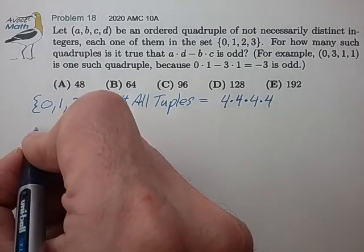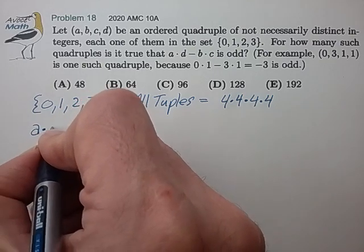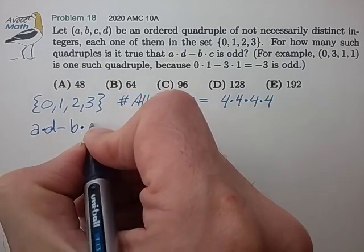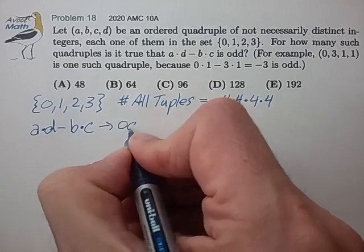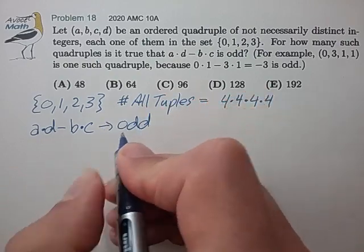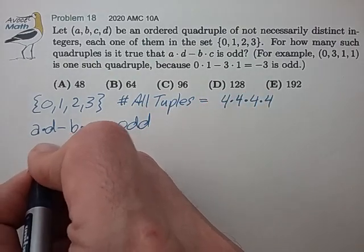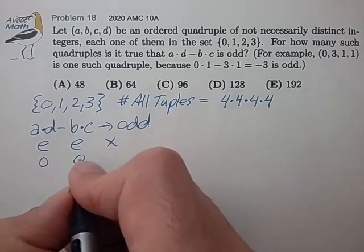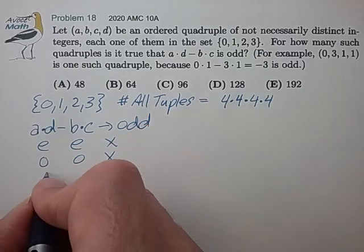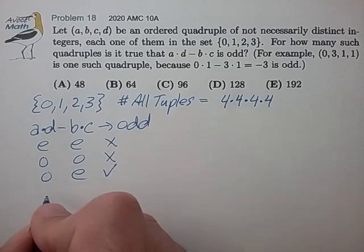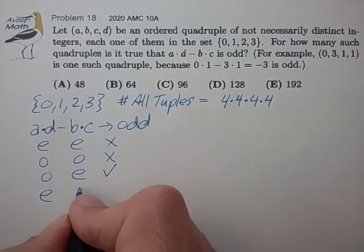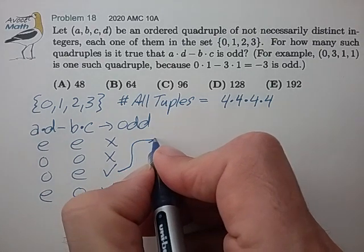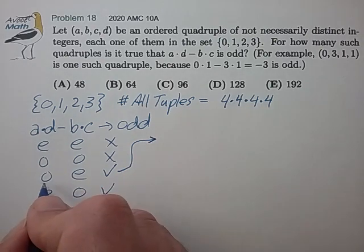We're trying to analyze the expression A times D minus B times C, and we want that to be odd. So if these two terms are even minus even, that's not going to work. Odd minus odd, that's not going to work. Odd minus even — that does work. And even minus odd, that does work.